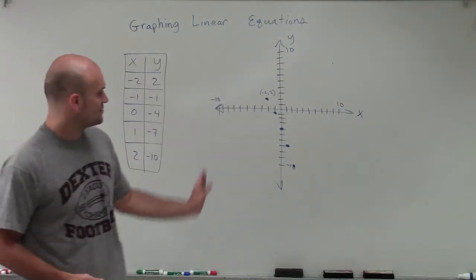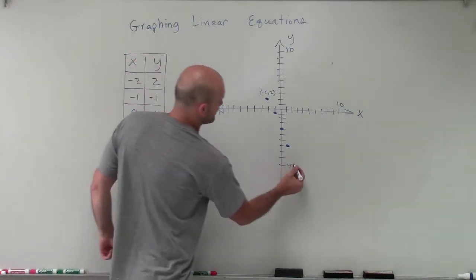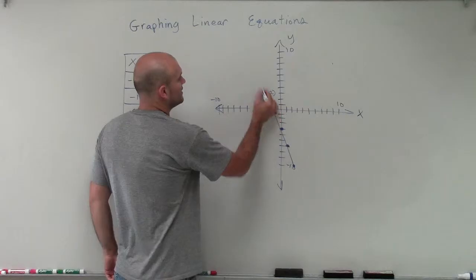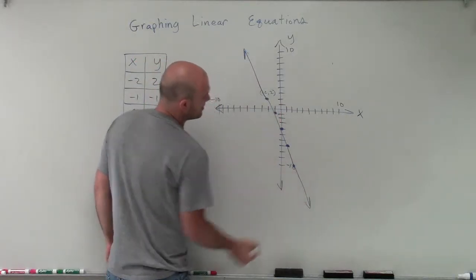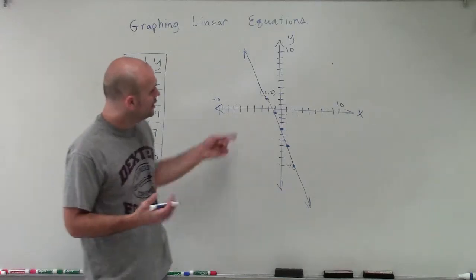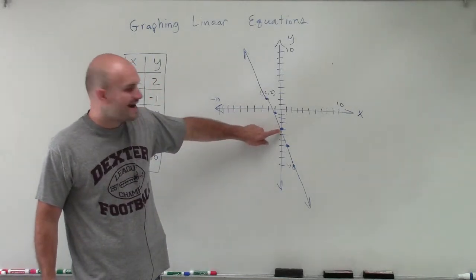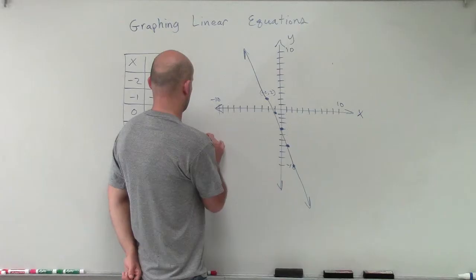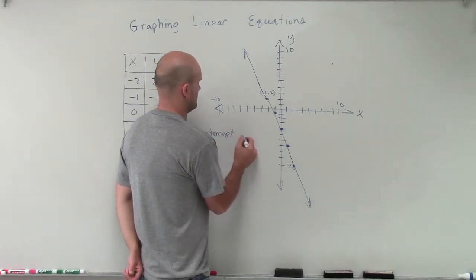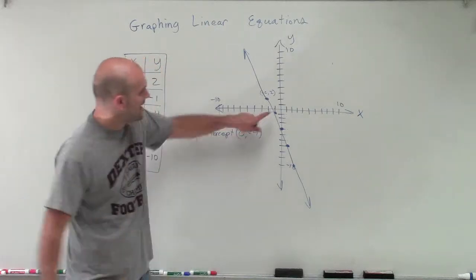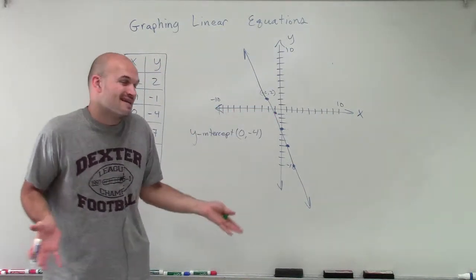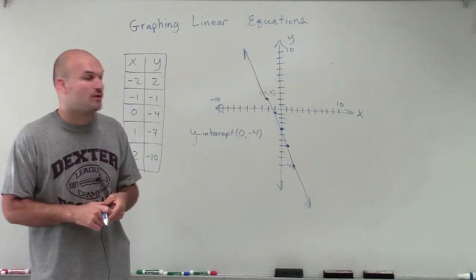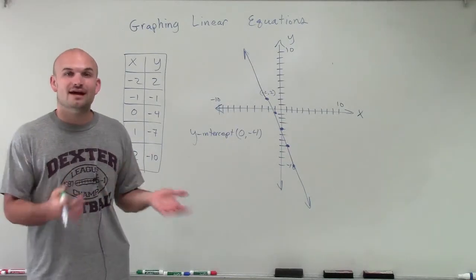Now you can see that if I connect these points, I'd make a nice straight line. This linear equation is going to continue indefinitely — there's no maximum point nor a minimum, because it continues in both directions. I have a y-intercept at 0, negative 4. And you can see that my x-intercept is between negative 2 and negative 1. We'll figure out exactly what it is later. So there you go, ladies and gentlemen — that is how you graph a linear equation. Thanks.